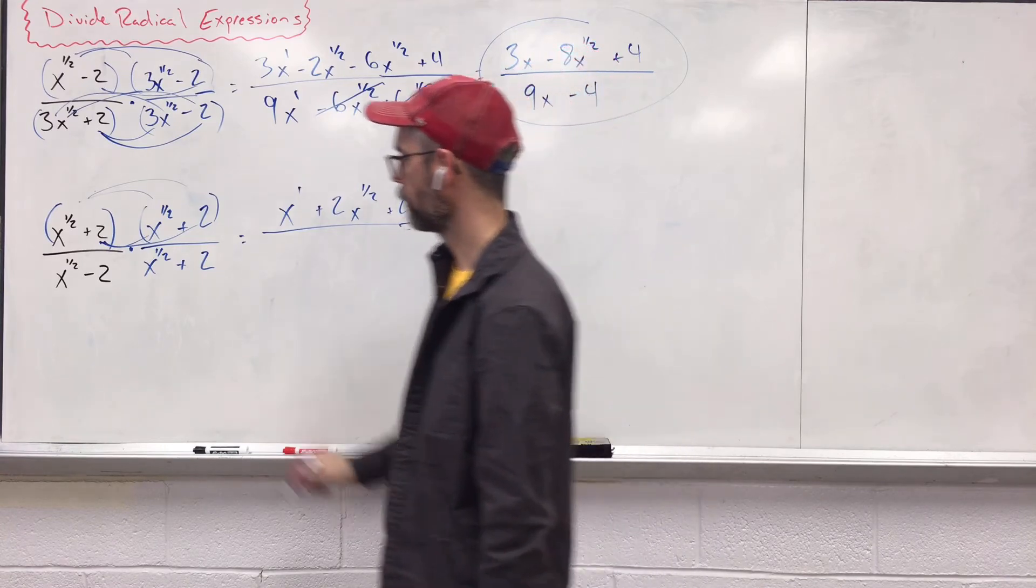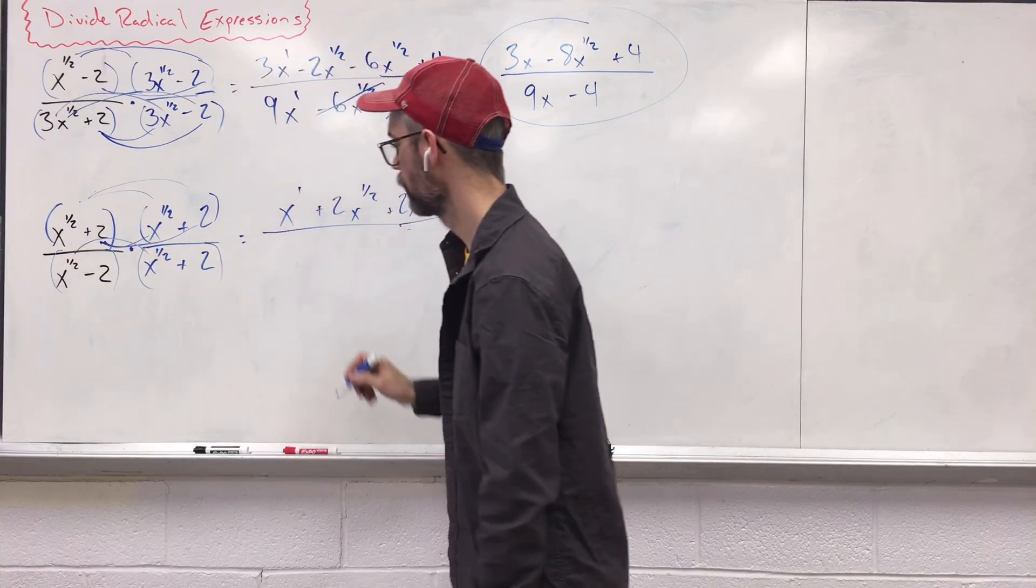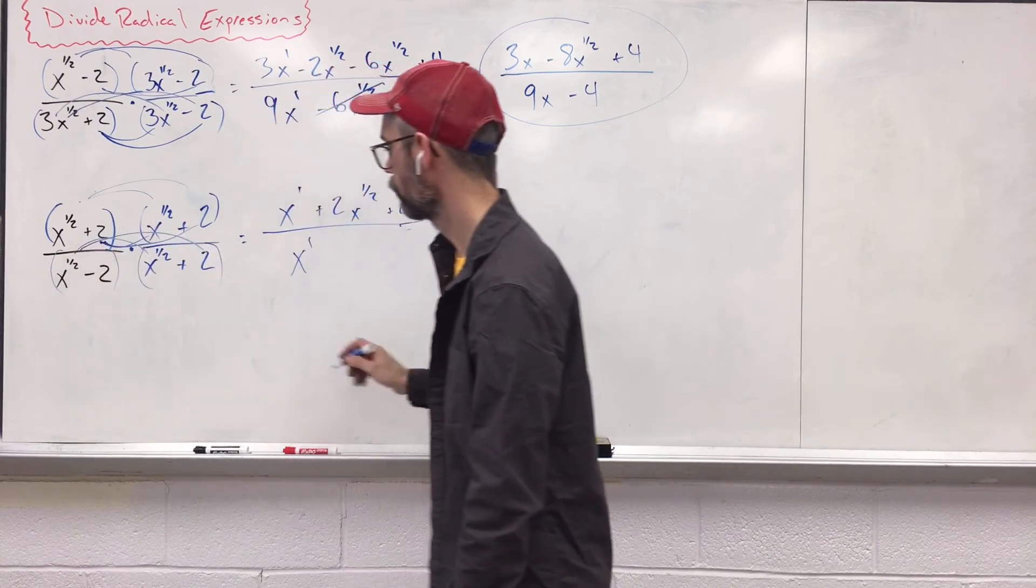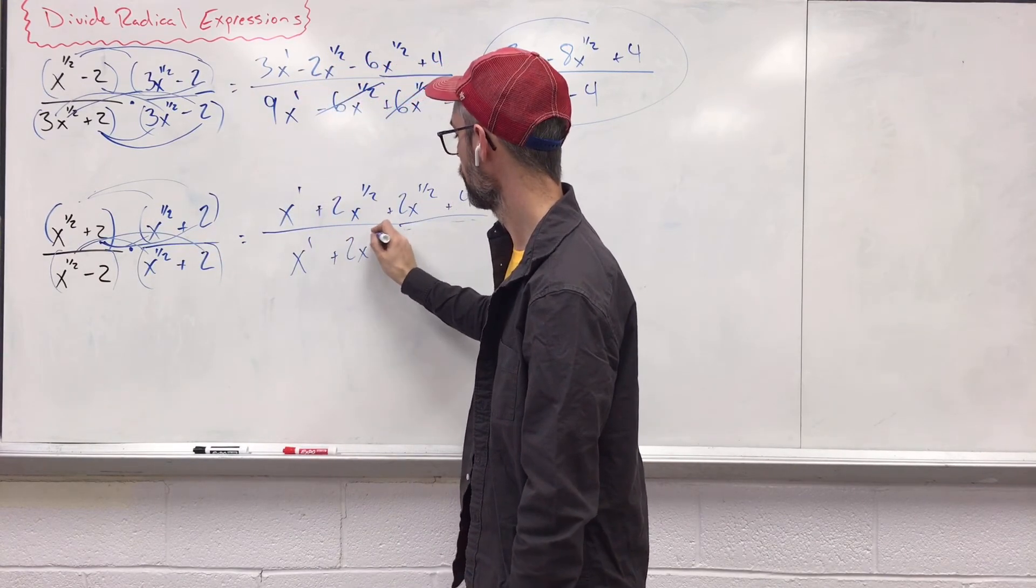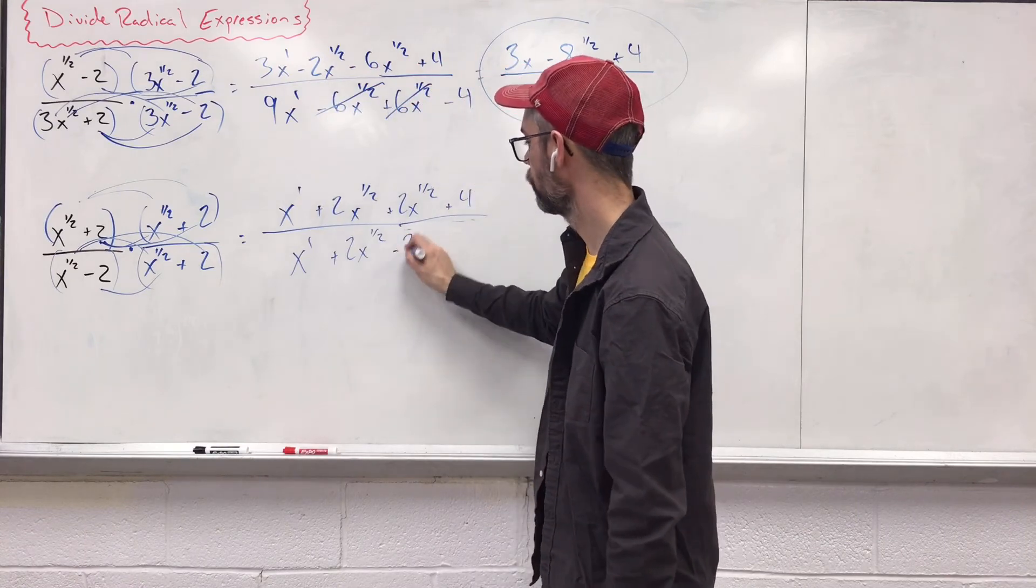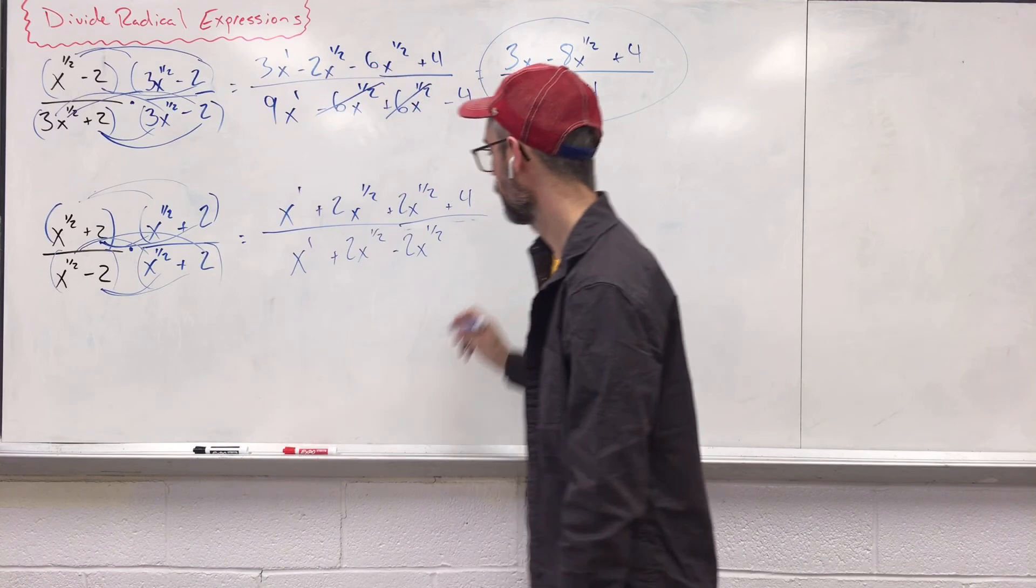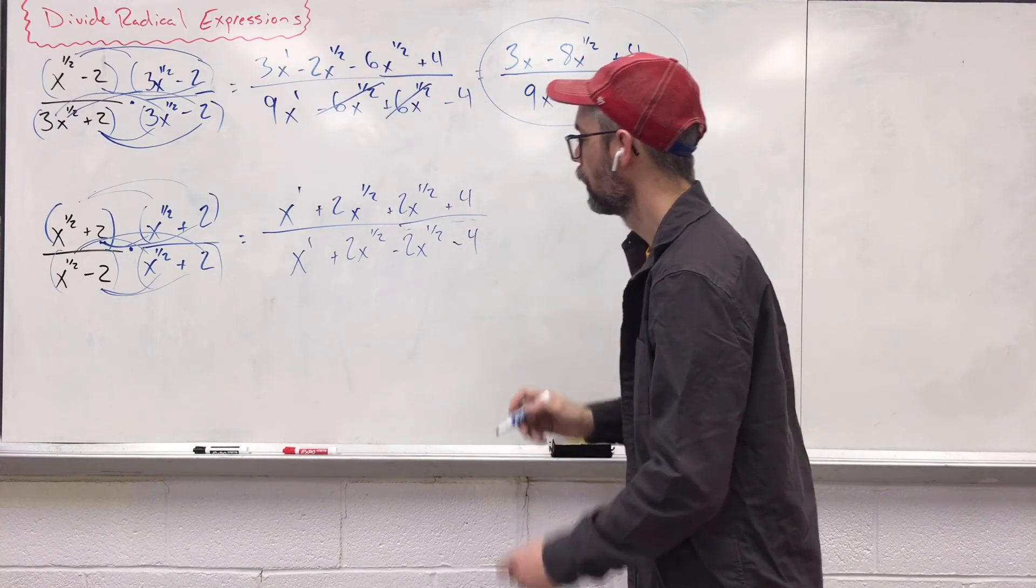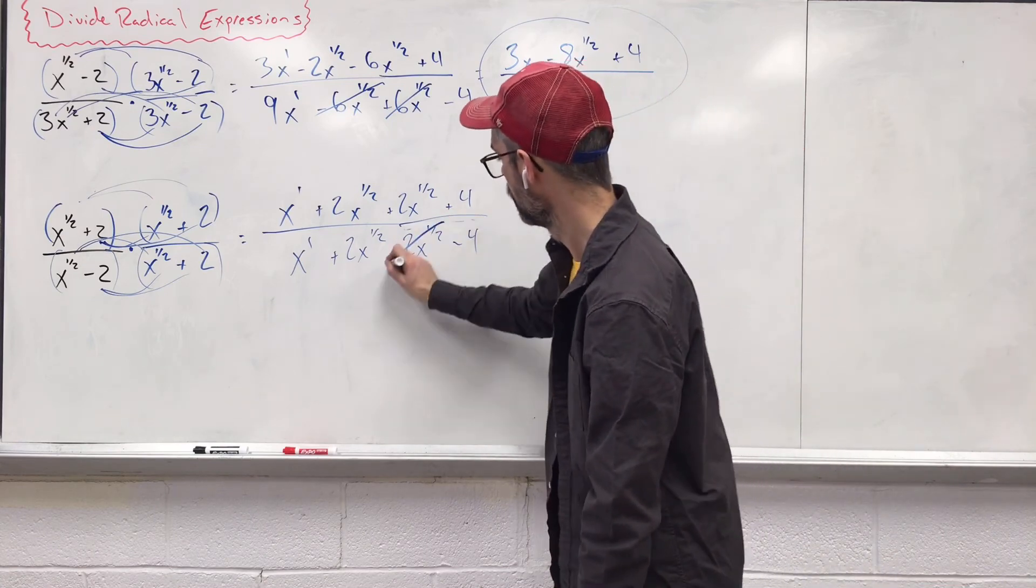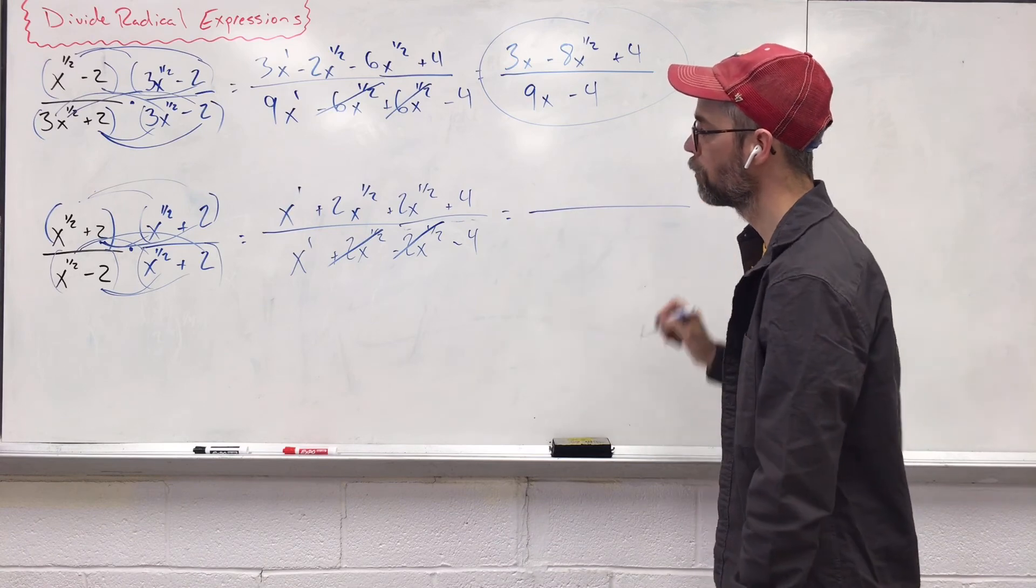On the bottom, distribute. x to the first. Distribute. 2x to the one-half. Distribute the negative 2. And one last one. You get that negative 4. All right. So, because of that conjugate, positive and the negative cancel out. And let's combine what we can combine.